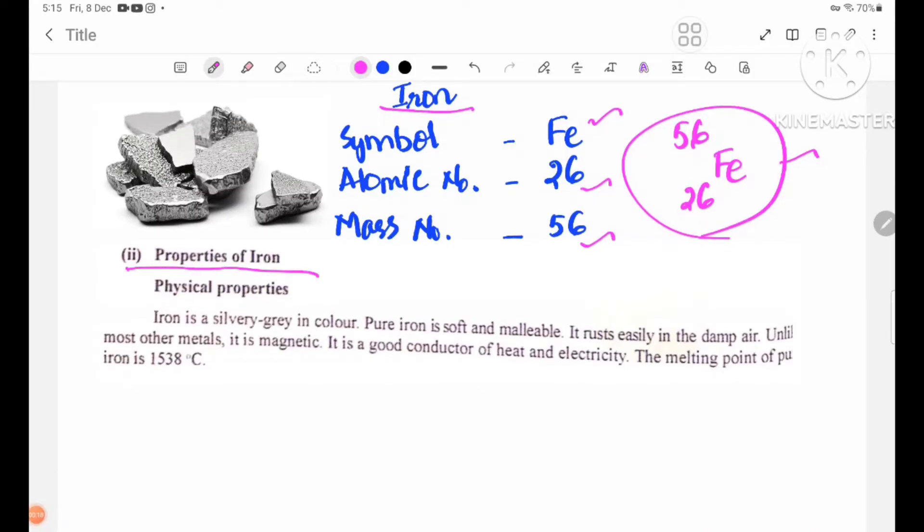Properties of iron - we're going to read about physical properties. Iron is a silvery gray in color. Iron is soft and malleable. It rusts easily in the damp air. And like most other metals, it is magnetic. It is a good conductor of heat and electricity. The melting point of pure iron is 1538 degrees Celsius.